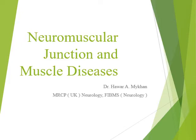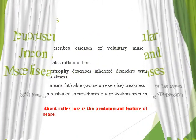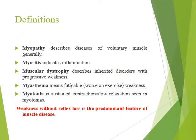Good morning, dear students. This will be my last lecture — it's about neuromuscular junction and muscle. Let's start with some definitions. Whenever you hear the word myopathy, think of disease of voluntary muscles. Myocytes means inflammation within the muscle. Muscular dystrophy almost always means an inherited disorder. Myasthenia means fatigability which is worse on exercise. Myotonia is a sustained contraction with slow relaxation.